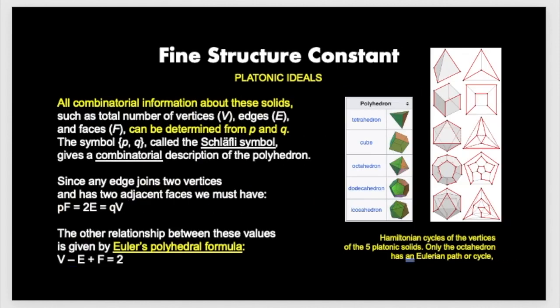because all combinatorial information about platonic solids, such as the number of vertices, edges, and faces, can be determined from P and Q. These are called the Schläfli symbol, and that gives a combinatorial description of the polyhedron. The other relationship between these values is given by Euler's polyhedral formula.